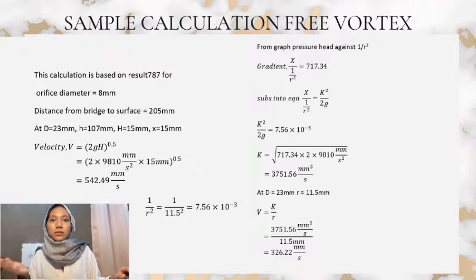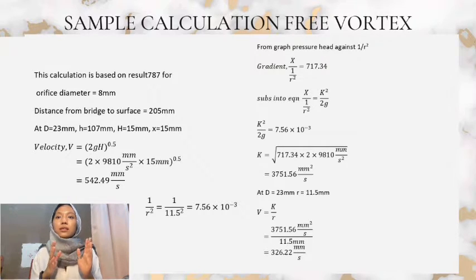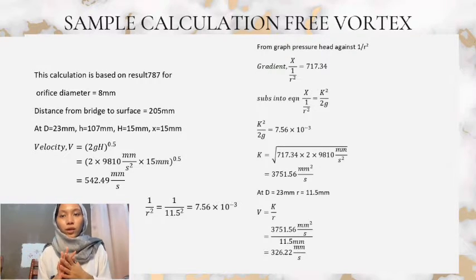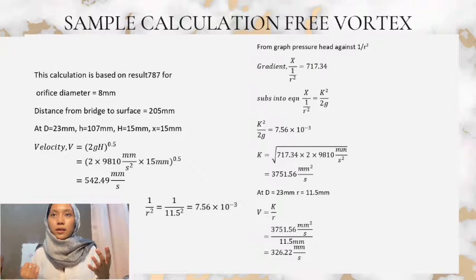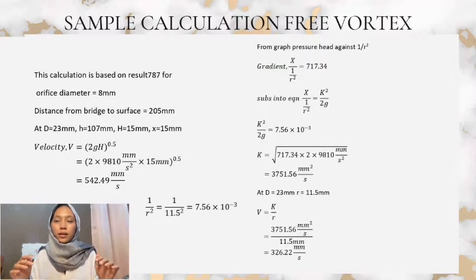The same steps and formula are used to get the actual velocity and theoretical velocity for the 24mm orifice. The graph of pressure height against 1 over R squared is plotted and the gradient is obtained. Then the value of k is calculated using the formula. From this, we can plot a graph of velocity against radius, which shows that for diameter 24mm, the velocity is almost constant across the radius.